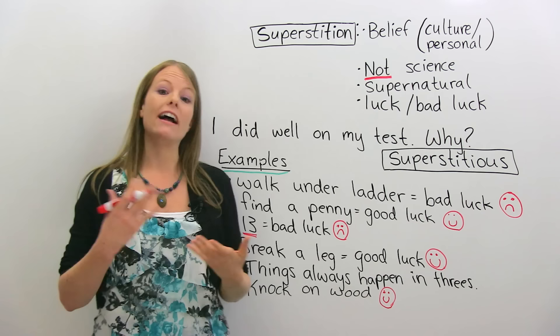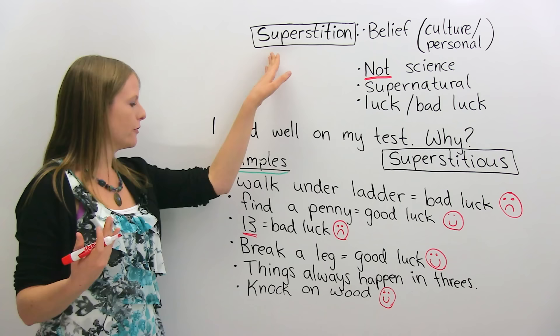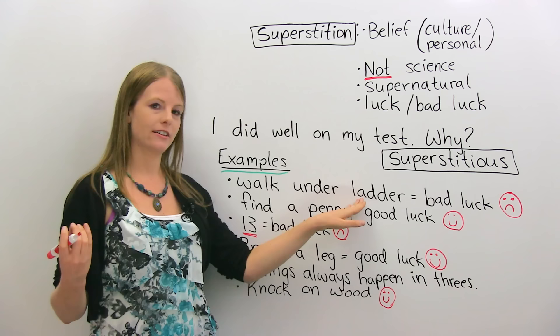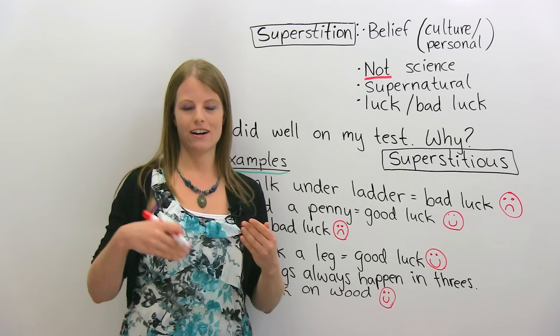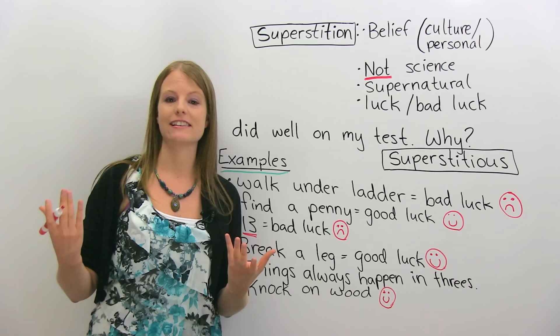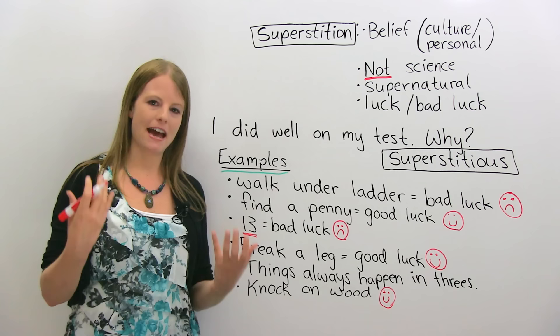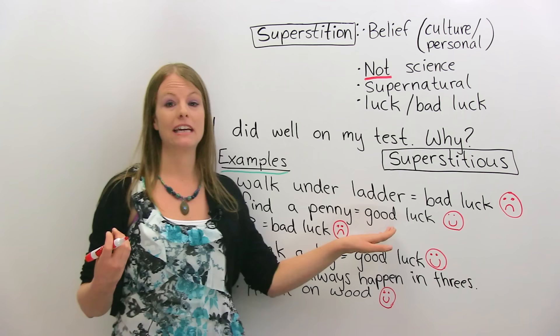Let's look at some Western superstitions I grew up with — ones from my own experience and culture. One example: if you walk under a ladder, this is very bad luck. When I walk down the street and I see a ladder, I never walk under it because I'm also very superstitious. Another one: if you find a penny — a penny is a coin, a form of money — I always pick it up off the ground because I think the penny will give me good luck. A lot of people in North America do this.